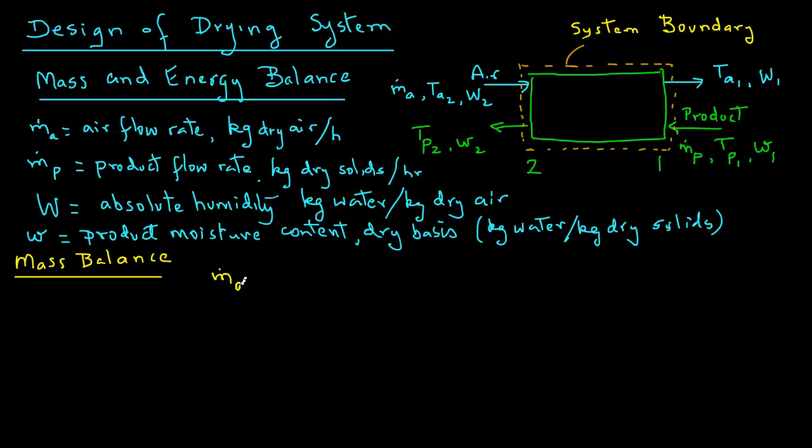We have air coming in, which is m_a times W2, which is the humidity ratio. So that's the amount of water that's entering with the air, plus m_p, and the moisture content of the product is w1. So that's the amount of water coming with the product.